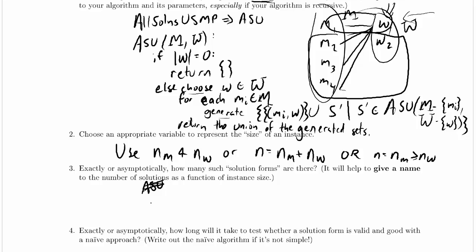That means if we analyze how long it takes for ASU to run, that's effectively going to tell us how many solutions there are. So let's say the number of solutions that ASU produces for a given number of men and number of women. I'm giving a name that corresponds to ASU.